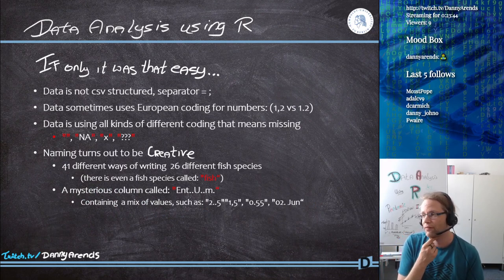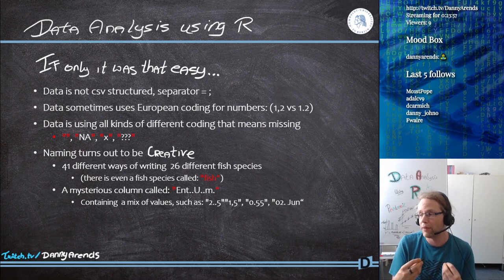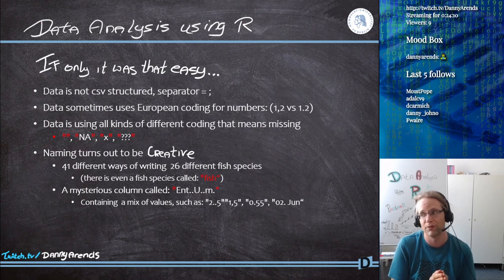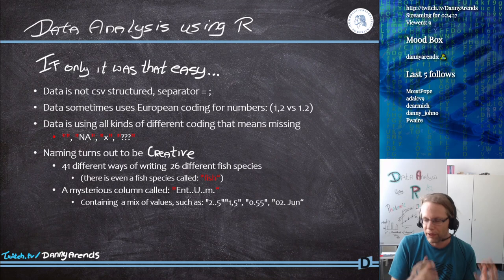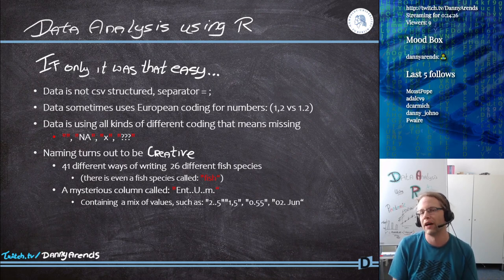Loading the data was not straightforward because the files were actually not comma-separated files despite being named CSV. If you name a file .docx I expect it to be a Word document, if it's .pptx I expect it to be PowerPoint - and when people send me CSV files I expect them to be CSV files. But they were not. I had to open them manually in a text editor because most of the files use a dot-comma as the separator.